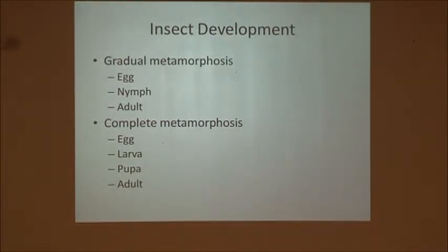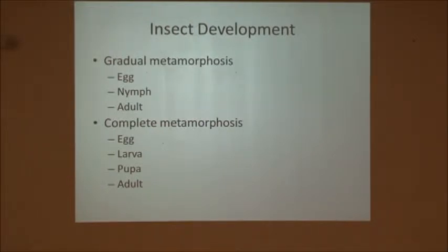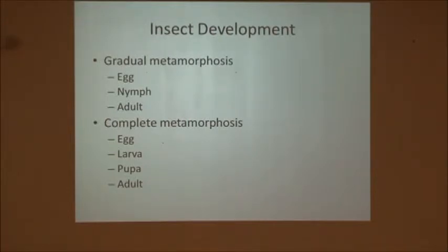Insect development — you have two different types of metamorphosis. We have gradual metamorphosis, which means it slowly grows from an egg into a nymph into an adult stage. Basically, this is what human beings go through. You start out in a smaller form of your adult self — you don't actually change what you are. You don't start out as a worm and then end up as a butterfly; you gradually grow and metamorphosize into an adult.